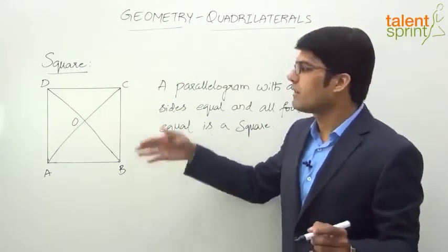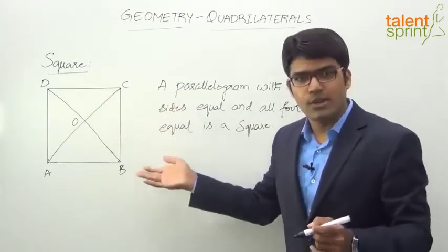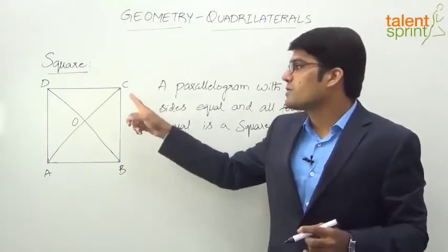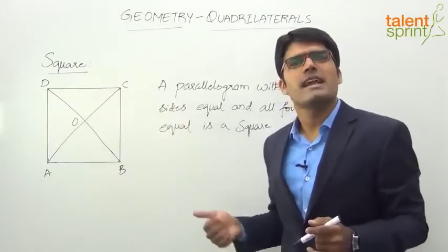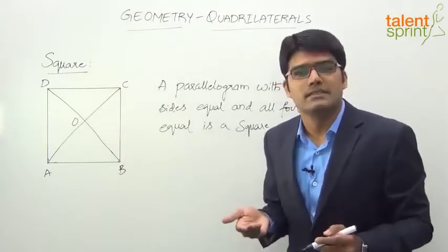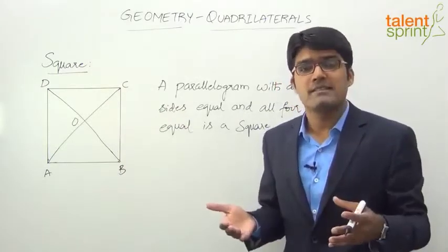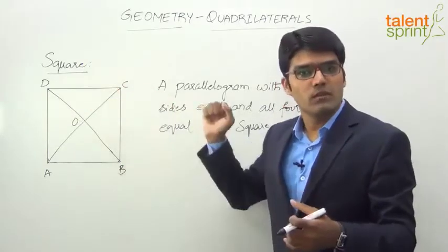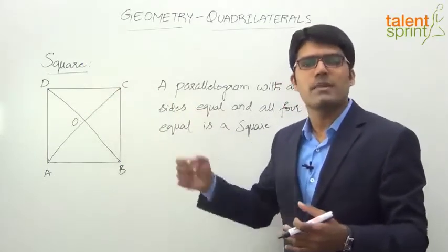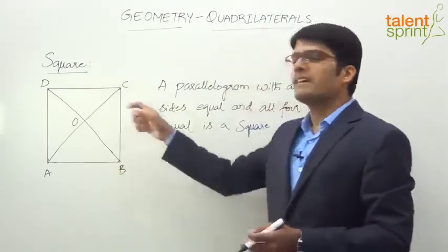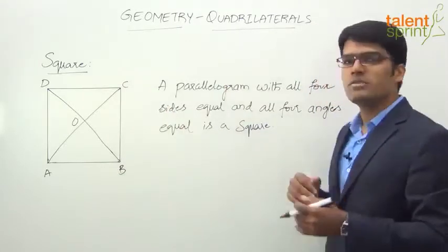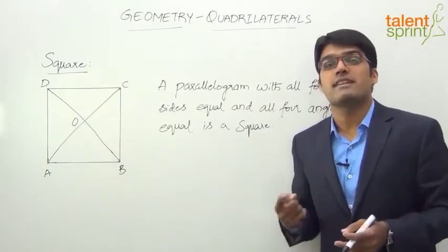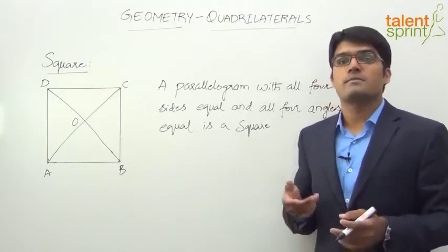In a square, the adjacent sides are equal and opposite sides are also equal. All the angles are equal: angle A equals angle B equals angle C equals angle D, and obviously each angle will be 90 degrees. Because the sum of interior angles in any quadrilateral is 360, so 360 divided into four equal parts gives 90 degrees each. So that's about a square.